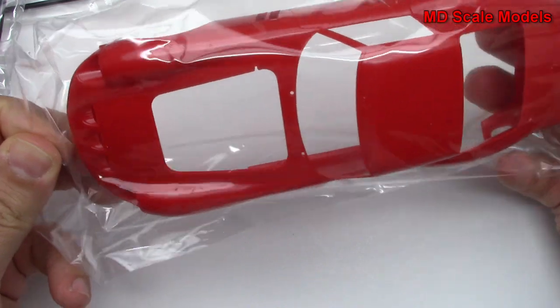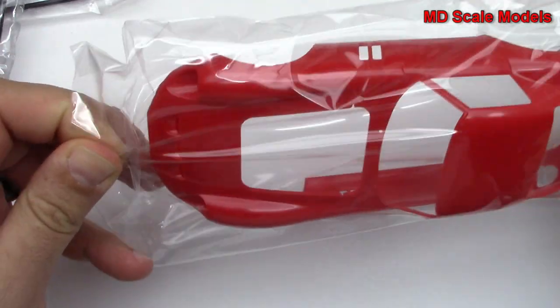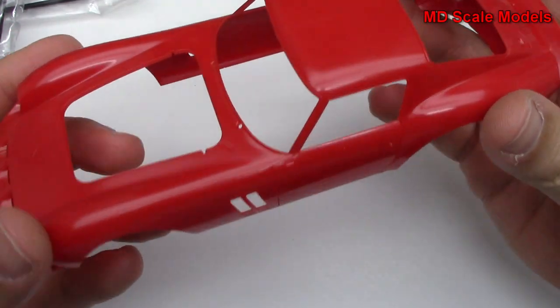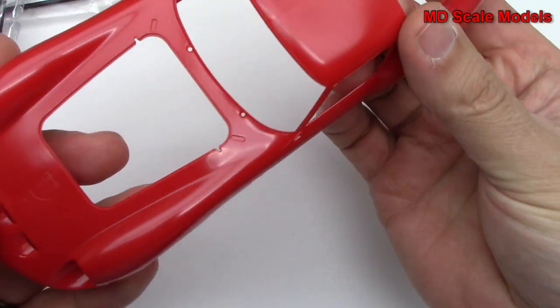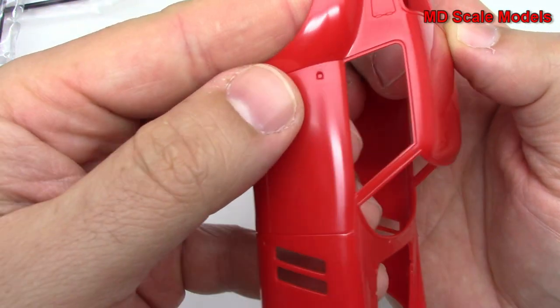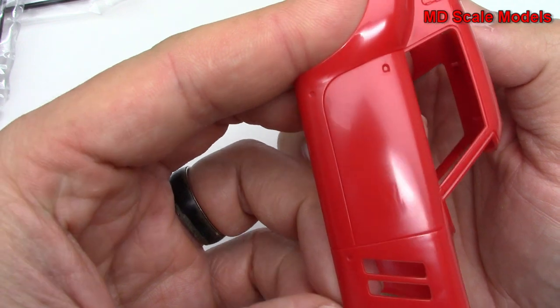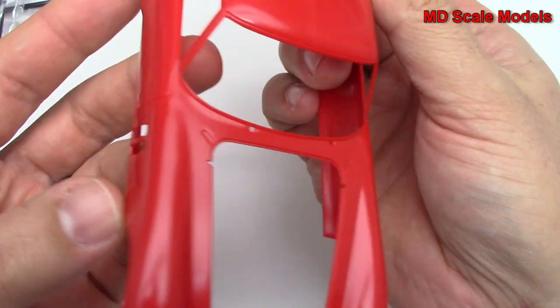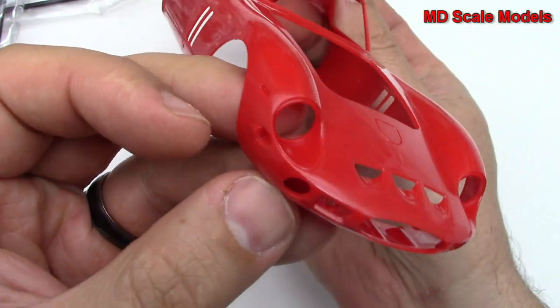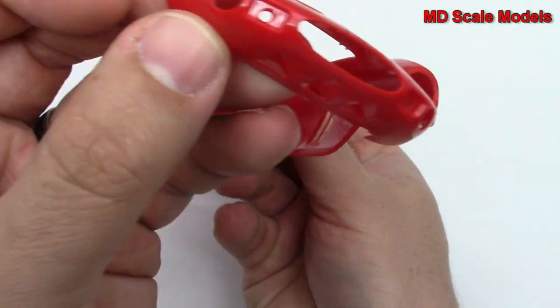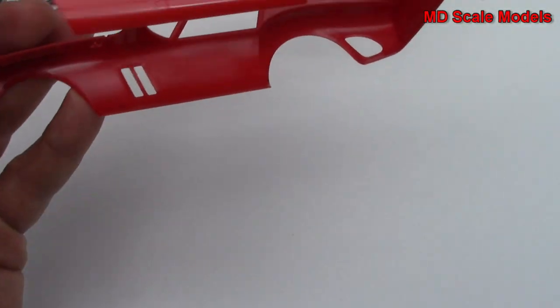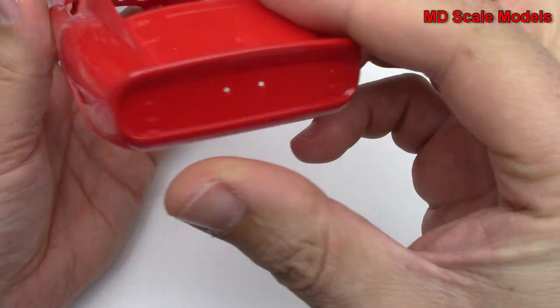Let's have a look at our body here. This is very nicely molded, no mold lines there, that's where the plastic joined. Very crisp and clean, well molded. I don't see any mold lines over here.